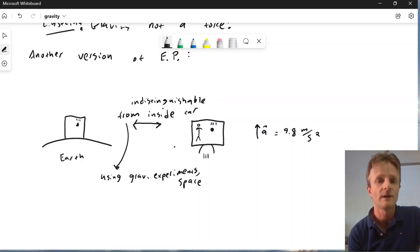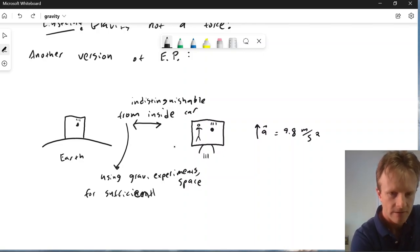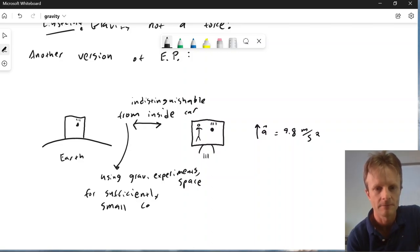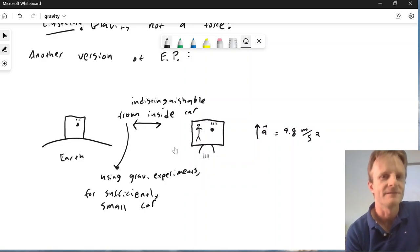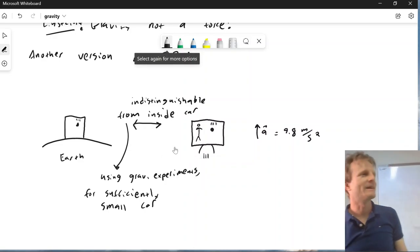We're using gravitational experiments for a sufficiently small car. But that is about as precise and good a principle as you'll get in physics. I think that's a very nice principle.